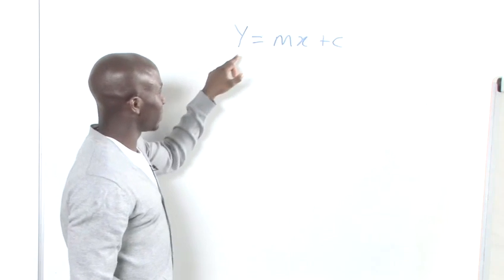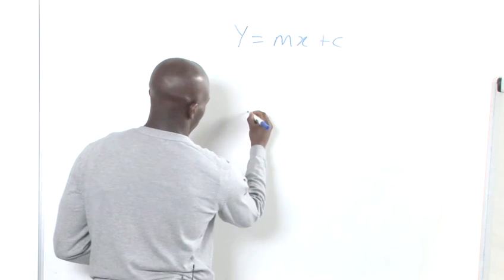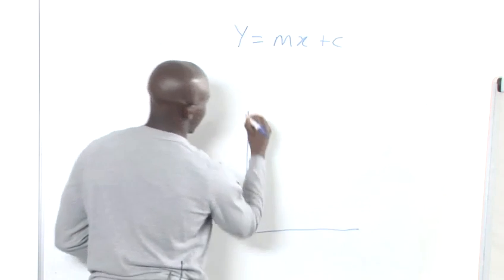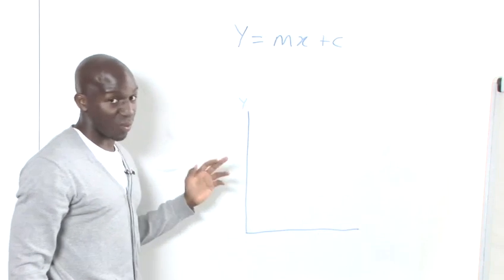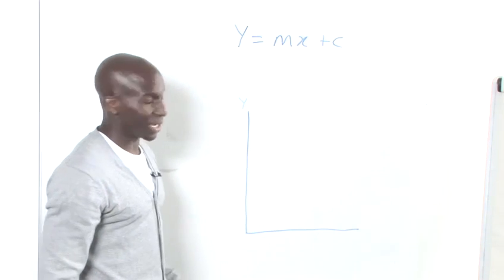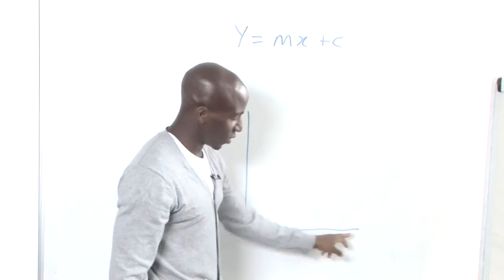Now, it's important to know that this value of y lies across one of the axes, and it's this vertical axis here which we call our y-axis. Now this value, which is our x variable, lies across your x-axis.